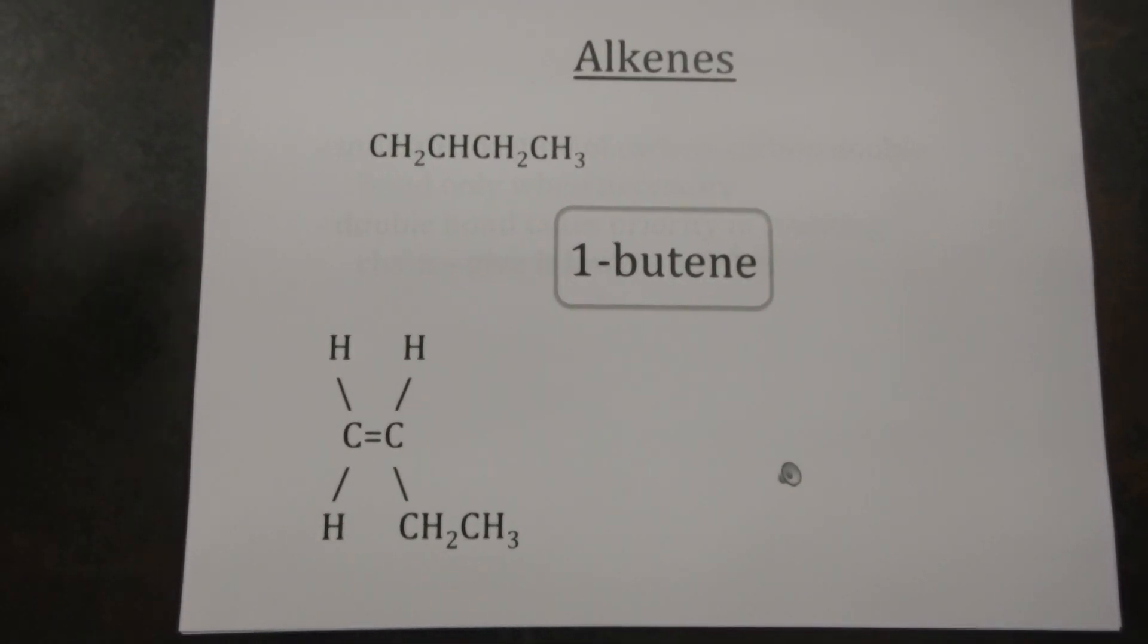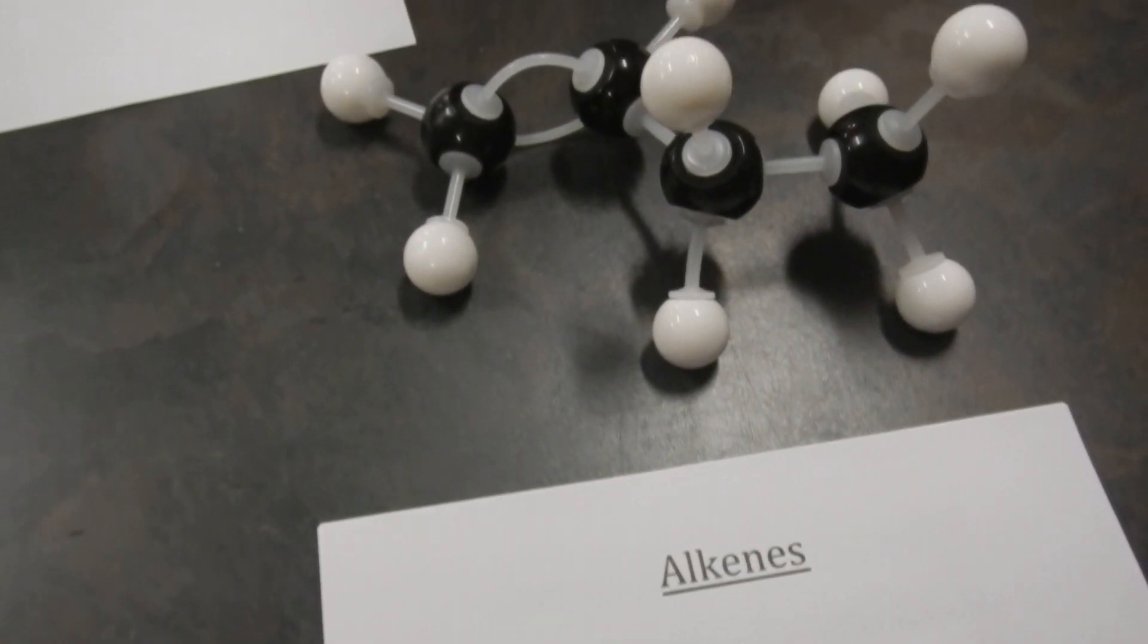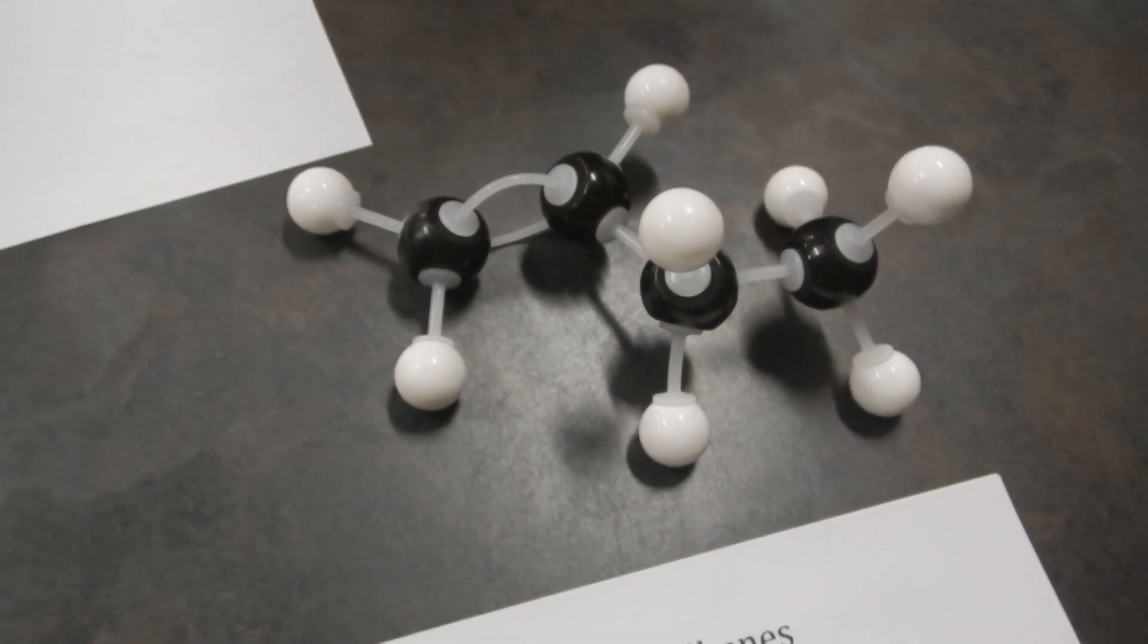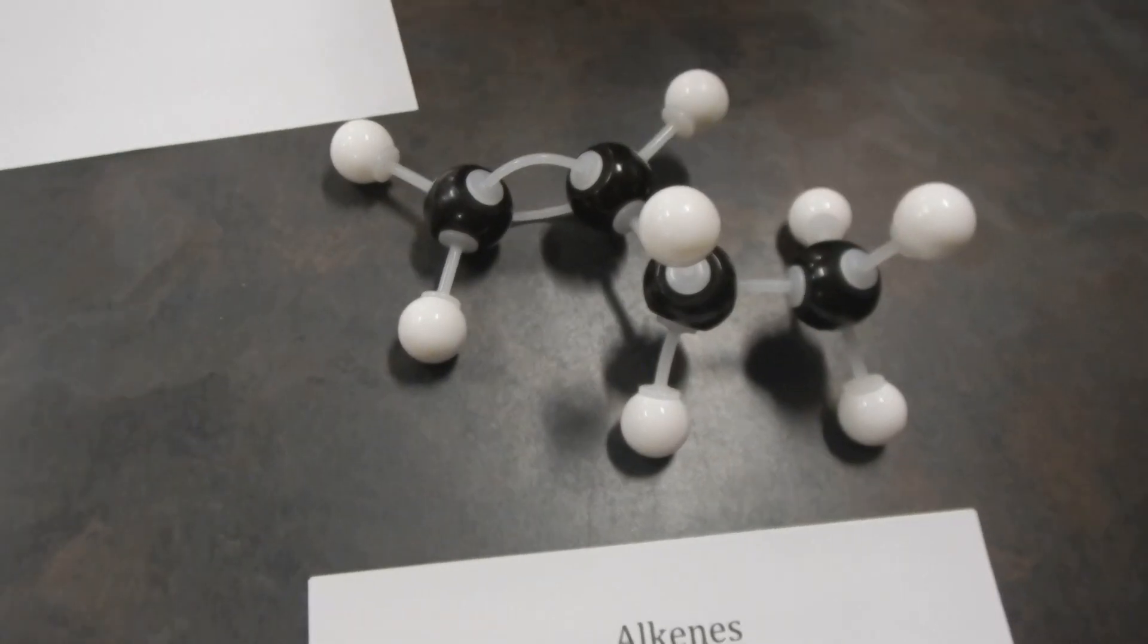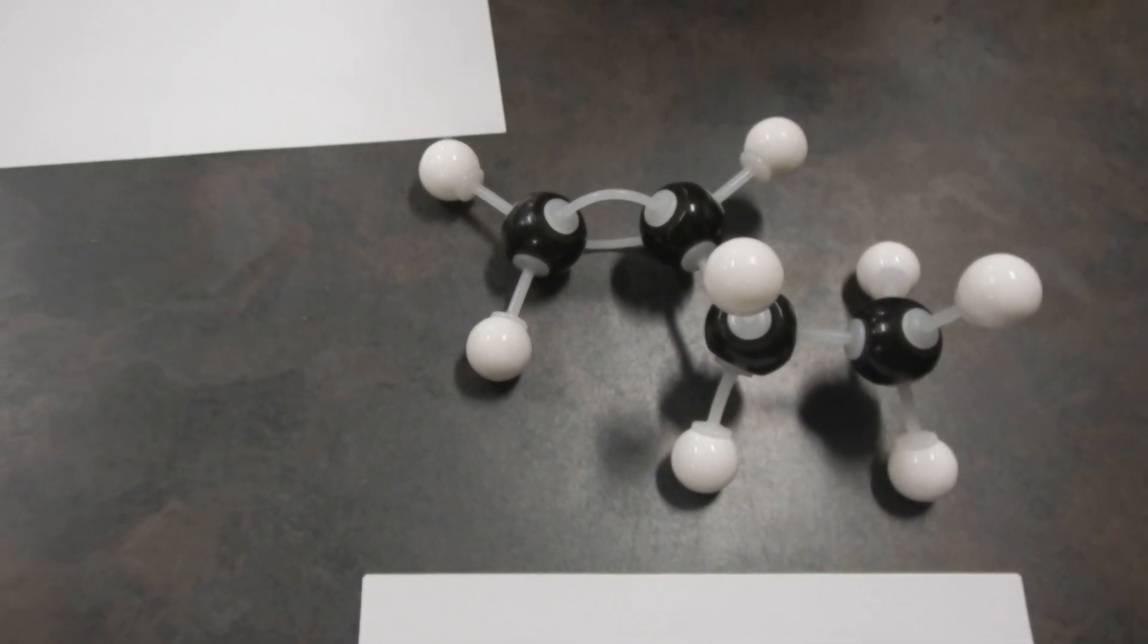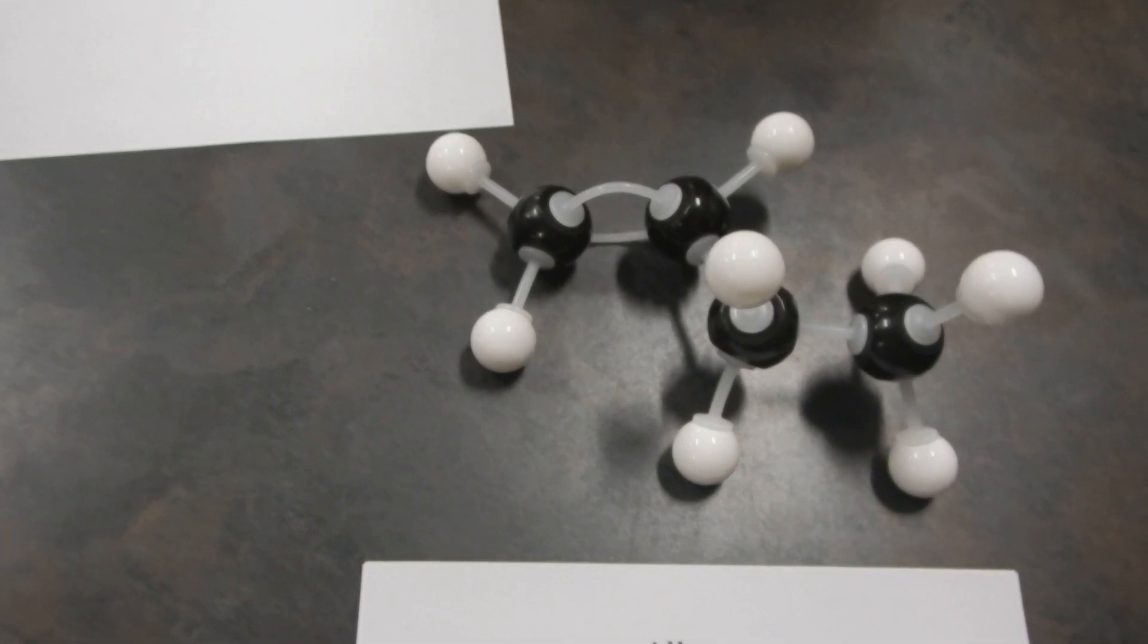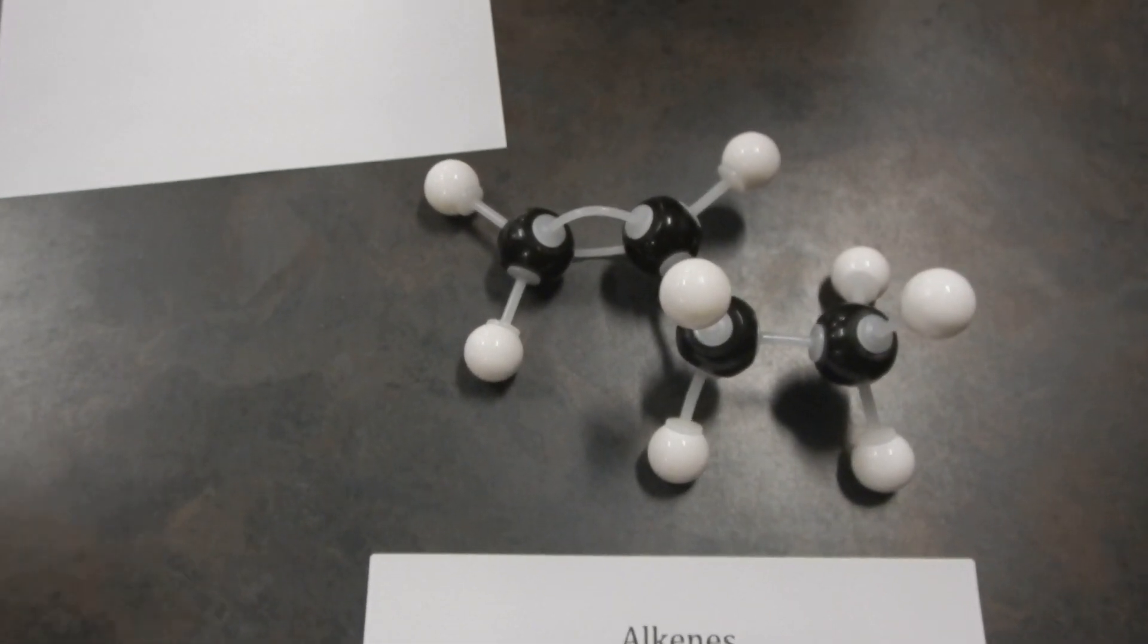So we go from here, and now we're going to look at our model of this. And again, we want to see we have four carbons in our longest chain, and we want to see that the double bond is between the first and second carbon atom. So that's it for 1-butene.